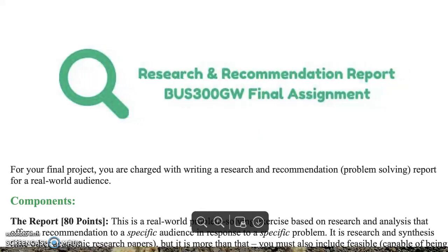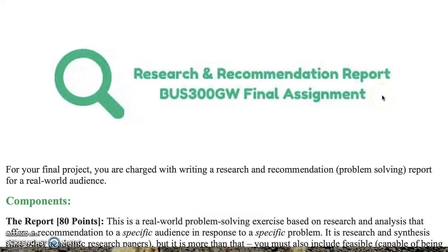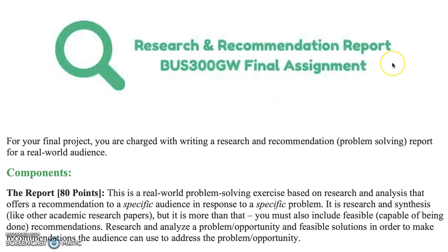This is the final cumulative assignment for the course. It's individual and there are different components to it, but you really want to think of this report as a problem-solving report. You're going to be identifying an issue and then figuring out how to solve it. You really want to be coming up with actual credible ideas for how a company could fix an issue, and you do want to make sure that you pick a company — something like Apple, Google, PG&E, or Microsoft — it's got to be a specific company.